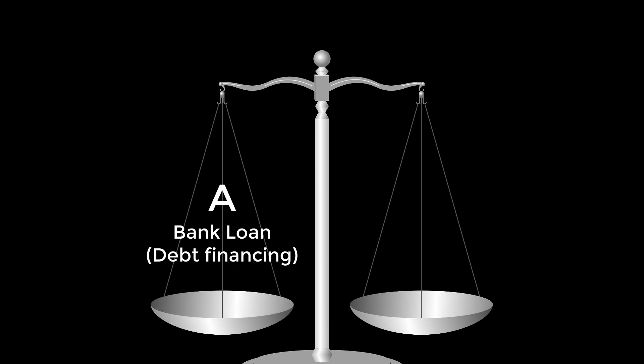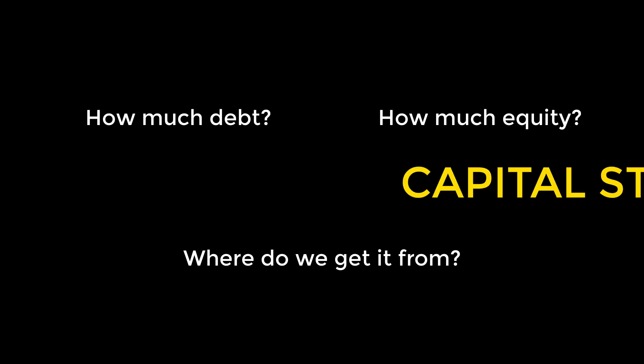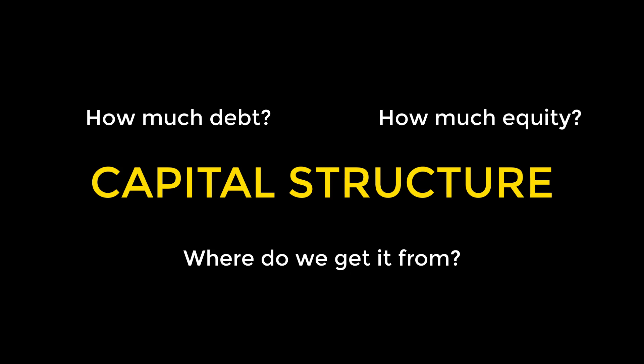After a bit of research, you narrow it down to two options. Option A: the bank is willing to offer a $100,000 loan with 10% annually compounding interest. Option B: an investor is interested in offering you the same amount for 40% equity in the company. Do you go with A or B, or some combination of both? Any question about how much and what mix of debt or equity your company uses is a question about capital structure. We'll explore those issues in detail in later videos.